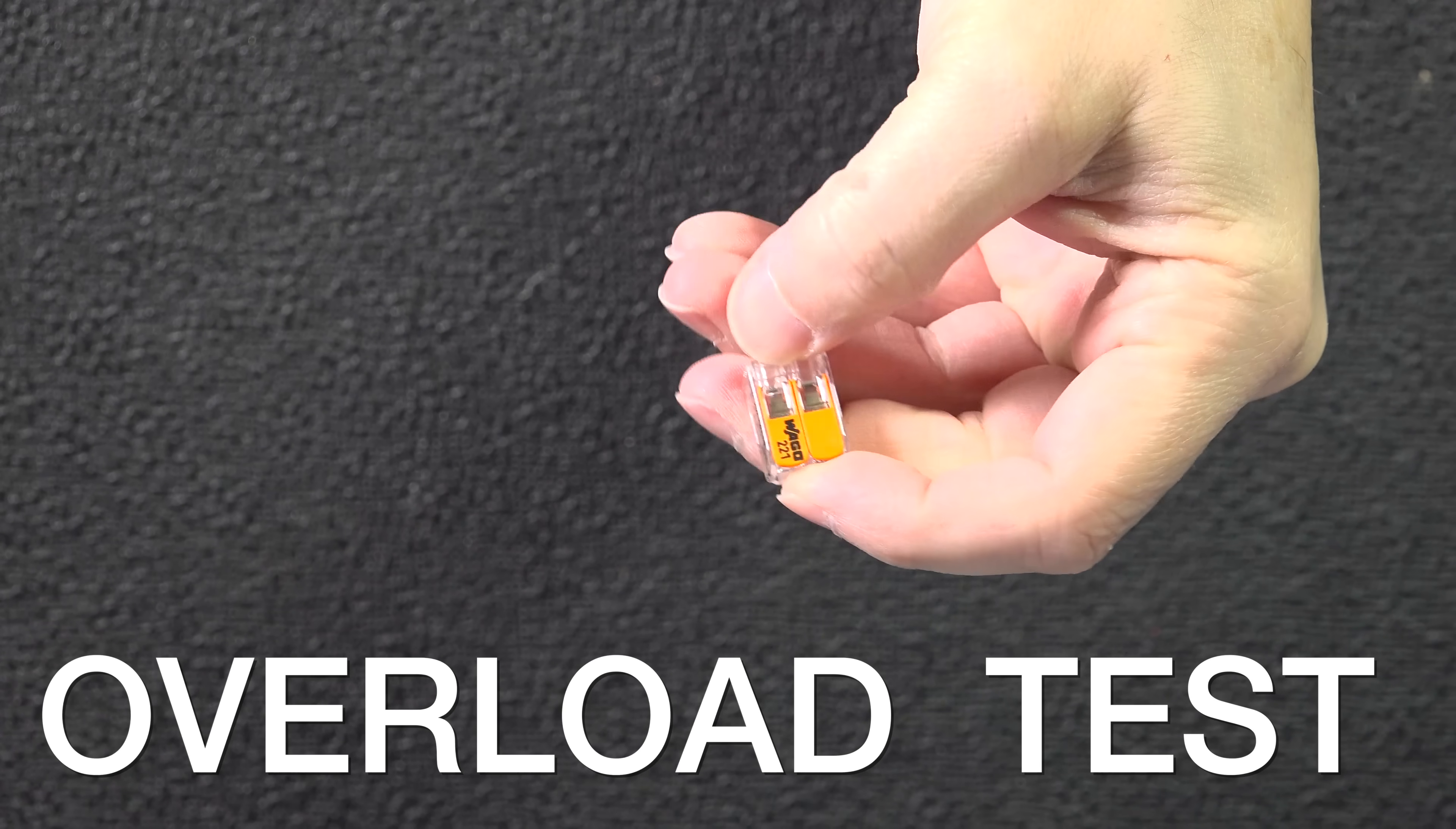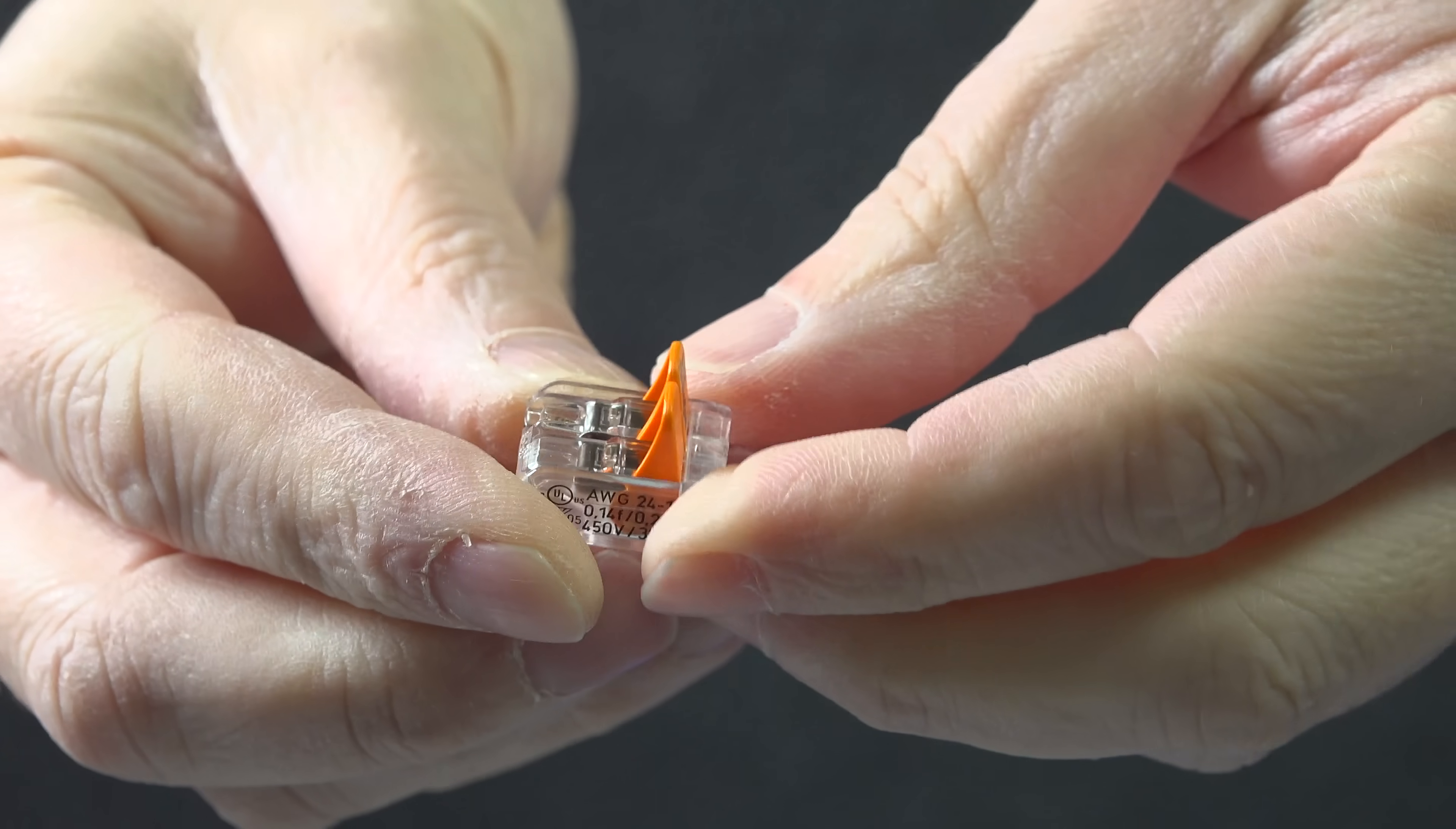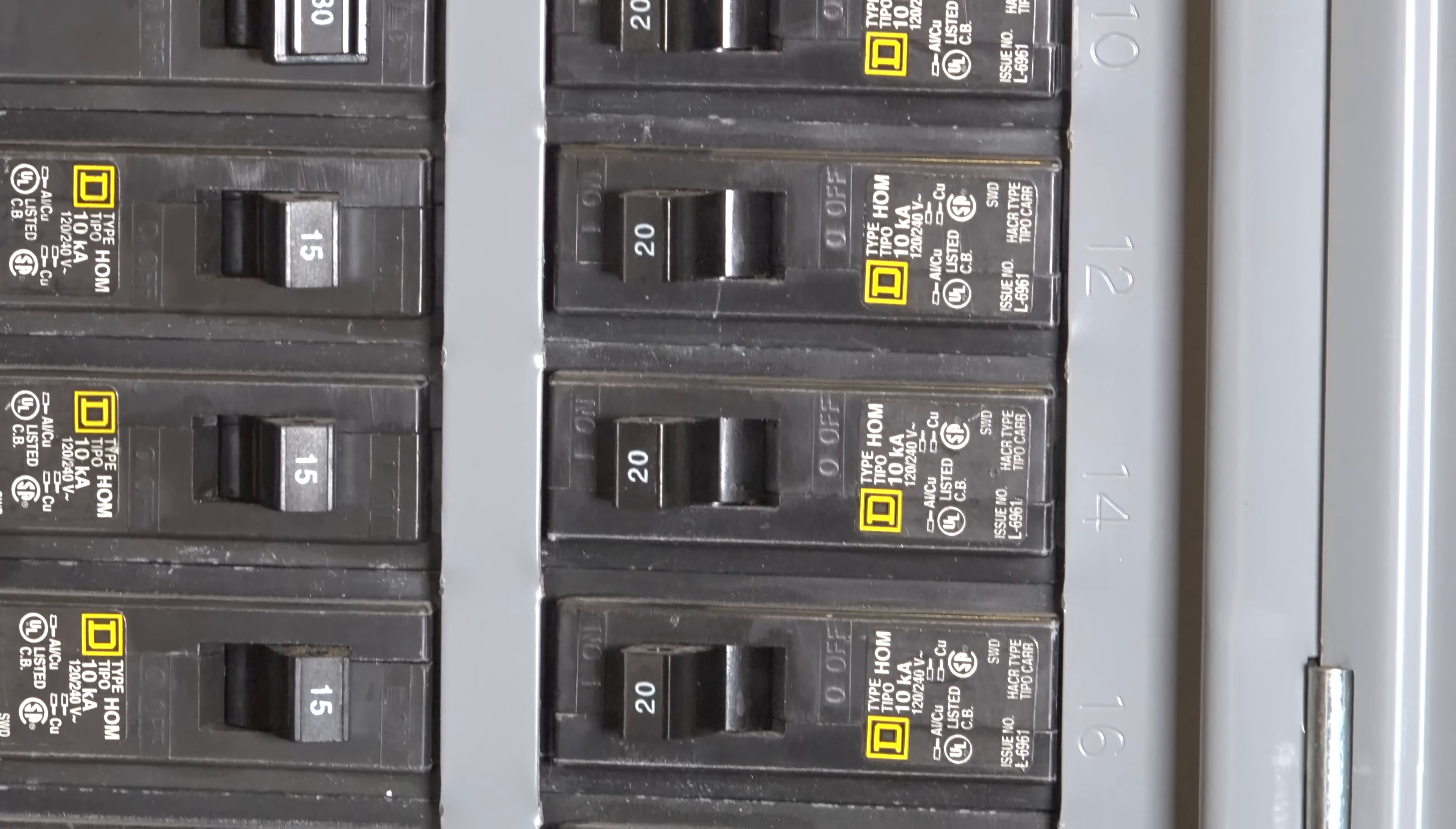The overload test is one of the most important things you can check because a connector's job is to conduct electricity, and I had a lot of comments saying these things just can't do the job because they're too small and they don't make a good enough connection. So in the US most circuits are either 15 or 20 amps. That's going to be things like your wall switches, outlets and most of your common needs.